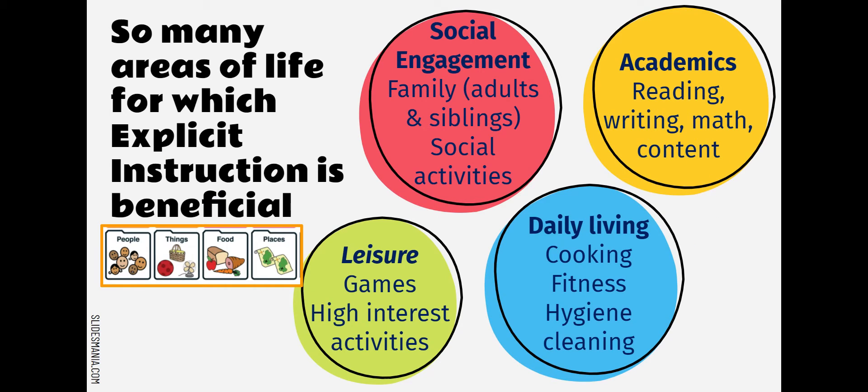When thinking about what to teach, our first go-to is usually academic content — reading, writing, math, social studies, science, the humanities. But for students with moderate to severe disabilities who also need instruction across daily living skills, social engagement, communication, and developing leisure activities, all of these areas are perfect for using the steps of explicit instruction. As we move through the 16 steps, keep in mind that whole-child philosophy and make sure we're really thinking through every way we need to provide support to our students and their families.